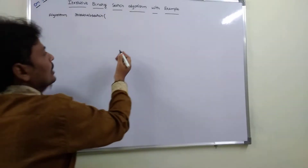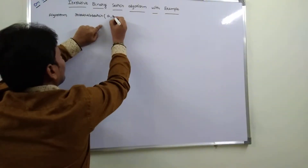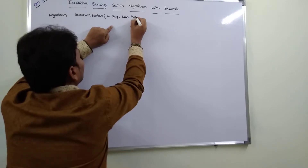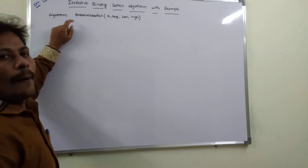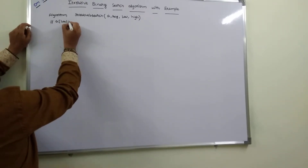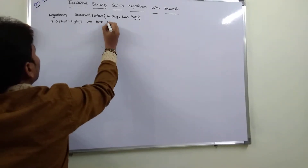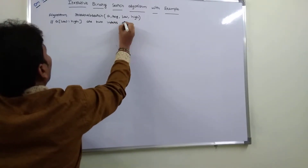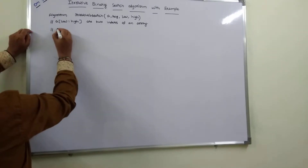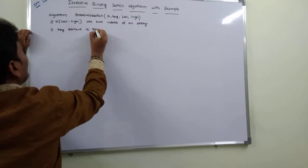Now let us look at the algorithm. The parameters we pass are: array A, the key element we want to search, and two indexes — low and high. A[low : high] are the two indexes of the array. The key element is the desired element you want to search.